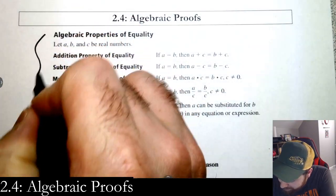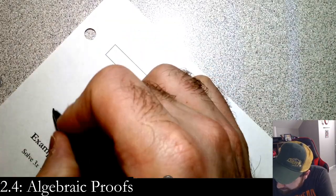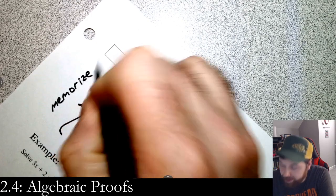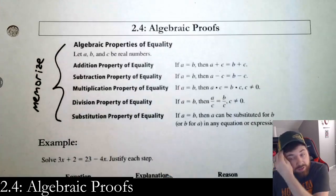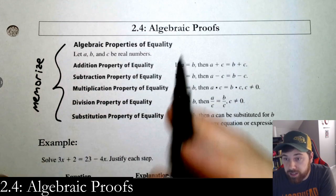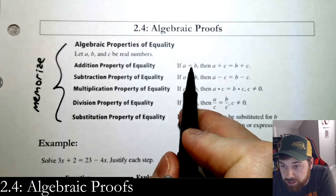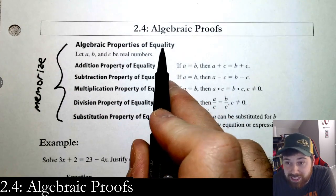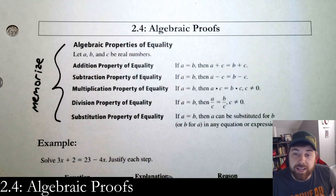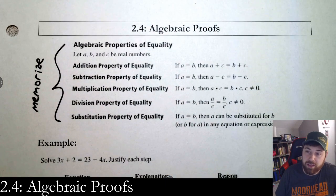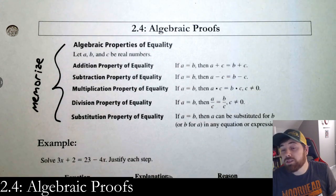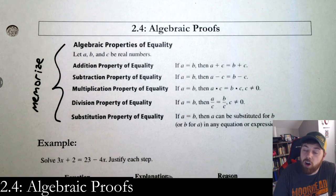I'm going to need you to memorize these right here. We'll talk about them for a second but I want you to memorize them. It's not so important that it says 'of equality' — these are all properties of equality. That's going to be very obvious because there's an equal sign, and if it has an equal sign it's going to be a property of equality.